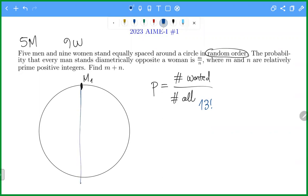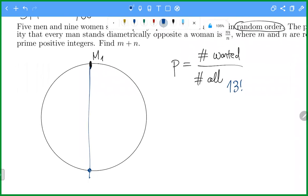First, let me just choose one of the women and let me locate her right opposite to m one. So I can choose the woman in nine choose one different ways.